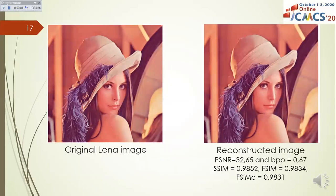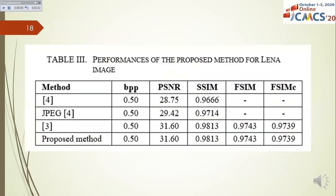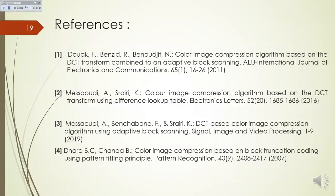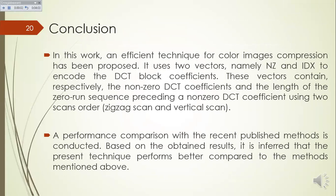Here is presented the original and reconstructed image of LENA, showing the visual and quantitative performance of the proposed method. Table 3 summarizes the results obtained on LENA images, and the list of references is provided. In this work, an efficient technique for color image compression has been proposed. It uses two vectors containing respectively the non-zero DCT coefficients and the length of the zero-run sequence preceding each non-zero DCT coefficient, using two scan orders: zigzag and vertical. A performance comparison with recently published methods confirms that the present technique performs better compared to the methods mentioned above.